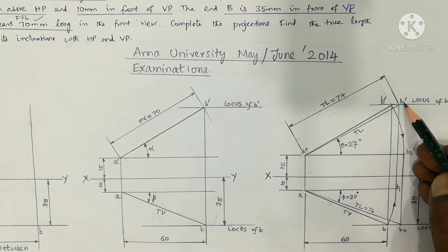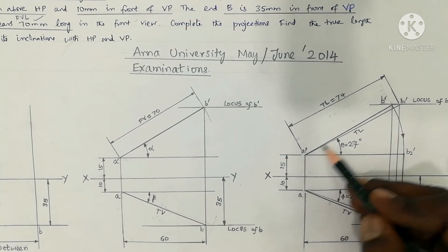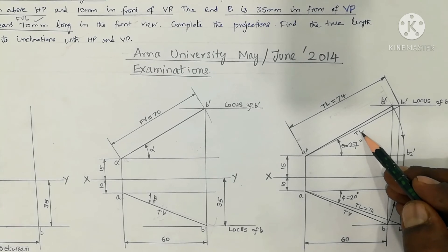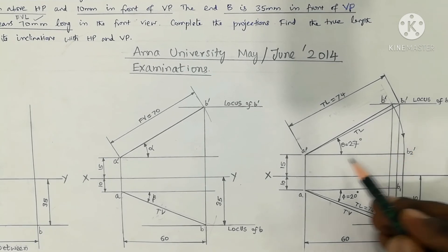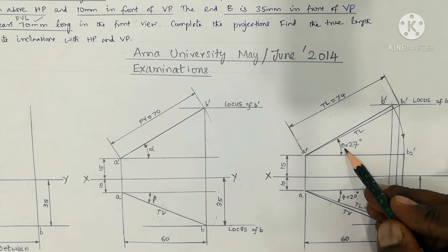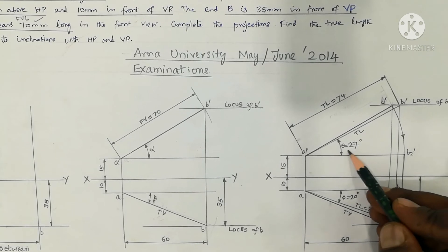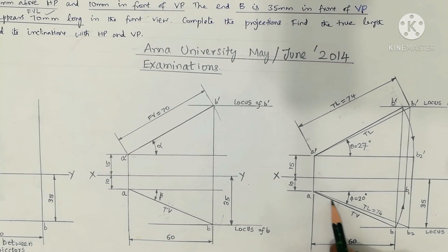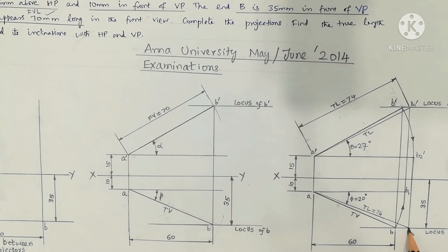Mark point B1'. Join A' to B1' — this is the true length of the line, shortly written as TL. The angle theta is the true inclination with HP, which measures 27 degrees. Measure theta using a protractor. AB2 gives the true inclination of the line with VP, which is angle phi.